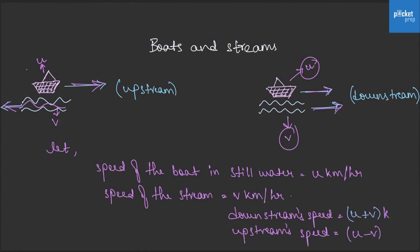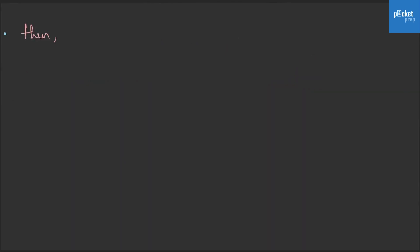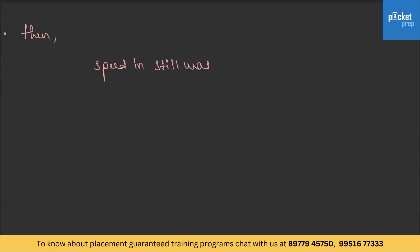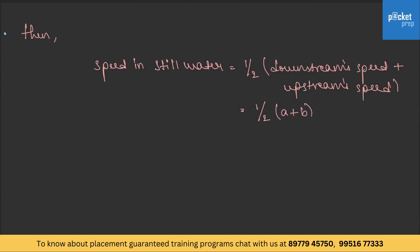The units will always be kilometers per hour. Let us assume the downstream speed to be a and the upstream speed to be b. Then, speed in still water will be half of downstream speed plus upstream speed, which is half of a plus b. The second formula is rate of stream, which is half of a minus b kilometers per hour — that means half of downstream speed minus upstream speed.